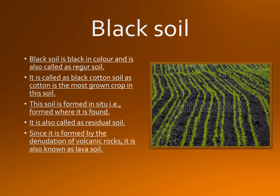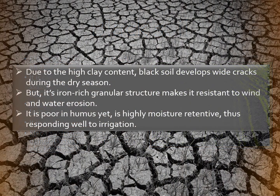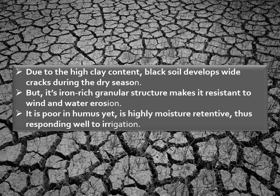Category Two black soil is mostly endangered at the national level. Due to the high clay content, black soil develops wide cracks during the dry season, but its iron-rich granular structure makes it resistant to wind and water erosion. It is poor in humus, yet is highly moisture retentive and thus responds well to irrigation.